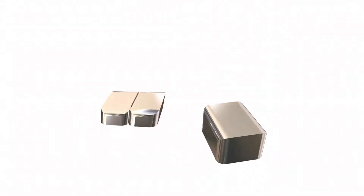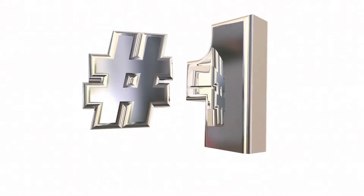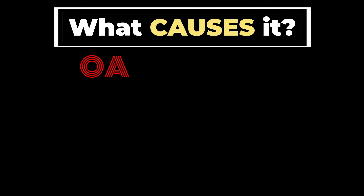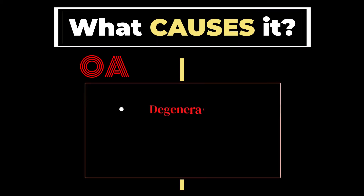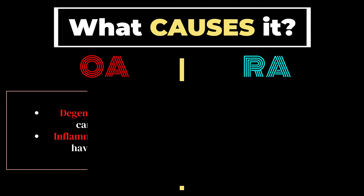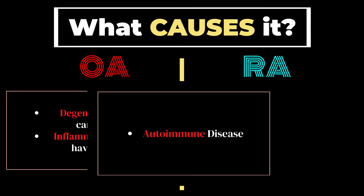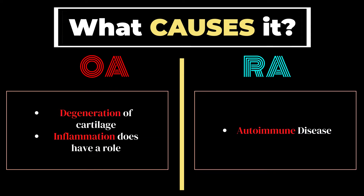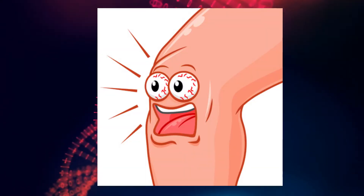First and foremost, you must know that these are both different diseases. Let's start with what causes them. For OA, it is more of a degeneration of the cartilage of the joints, although recent studies have found that inflammation does play a role too. On the other hand, rheumatoid arthritis is an autoimmune disease. In layman's terms, it means your body's own antibody is attacking your joints' tissue, causing inflammation and destruction. The real reason behind it is complicated, and to be honest, like most diseases out there, no one really knows why.